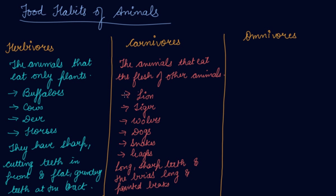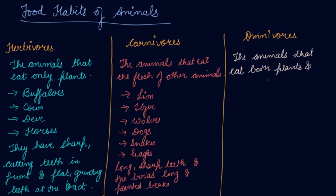Now, omnivores. Omnivores are animals that eat both plants and animals. Animals that eat both plants and other animals are known as omnivores.